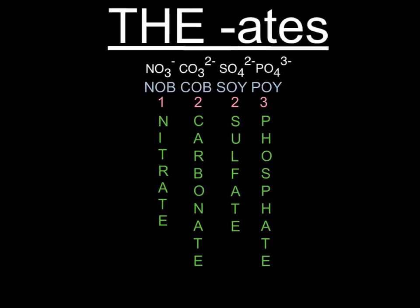The first tool you can use is 'Knob Cob Soy Poi' to remember the -ates. These are four compounds that end with -ate that you can remember using this phrase. It may sound weird, but here's how it works. Nitrate and carbonate — NO3 and CO3 — both have three oxygens, so they're 'Knob' and 'Cob' because the B looks a little bit like a three.